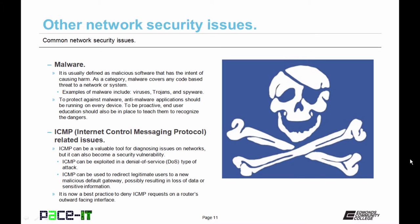The Internet Control Messaging Protocol itself may become a security issue. ICMP can be a valuable tool for diagnosing issues on networks, but it can also become a security vulnerability. ICMP can be exploited in a denial of service type of attack, and it can also be used to redirect legitimate users to a new malicious default gateway, possibly resulting in loss of data or sensitive information. It is now a best practice to deny ICMP requests on a router's outward-facing interface.